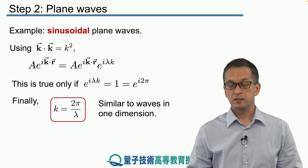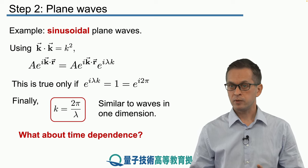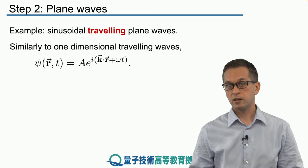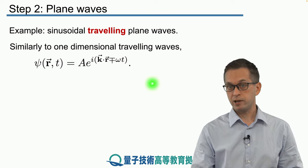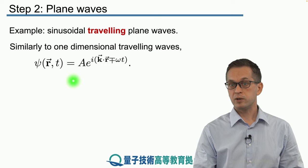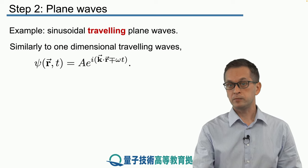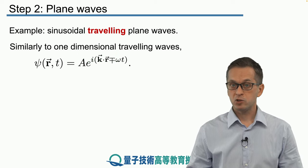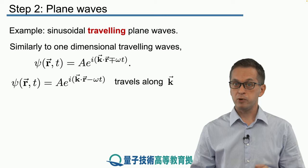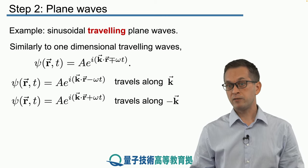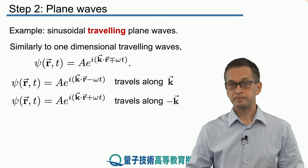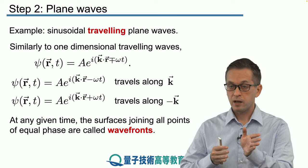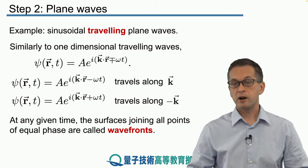The next question is how fast does the wave travel. First, we need to include time dependence. For a sinusoidal traveling plane wave, we do the same as in one dimension: in the exponential form, we add ∓ωt. With −ωt the wave travels along the k direction; with +ωt it travels in the opposite, −k direction. All planes of constant ψ traveling in time are called wave fronts.